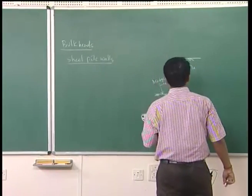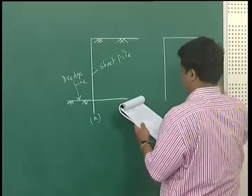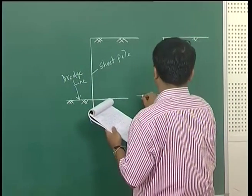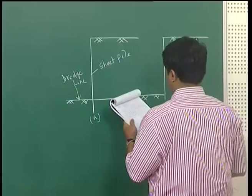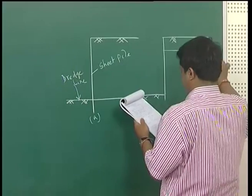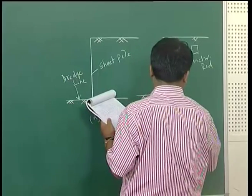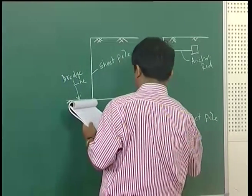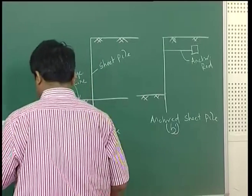Case 1: sheet pile structure. Case 2 involves an anchor rod — this is your anchored sheet pile.